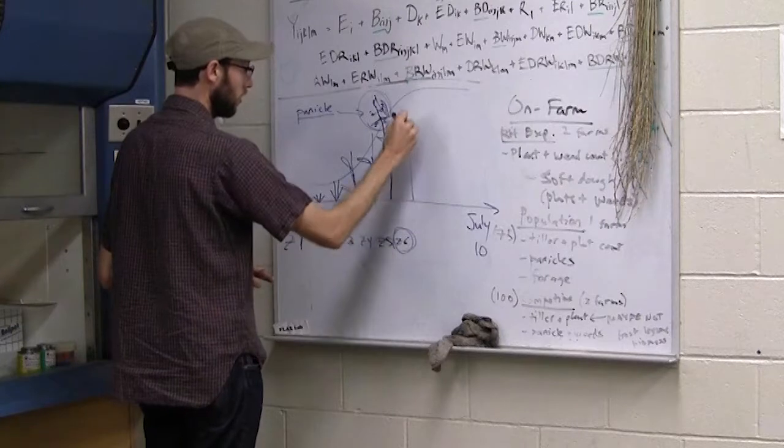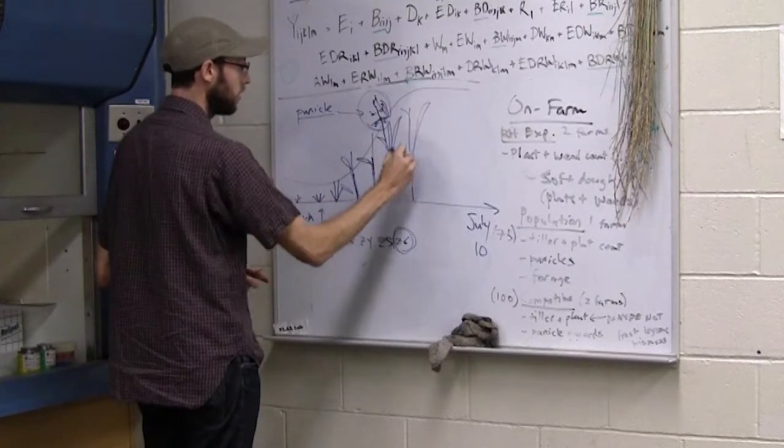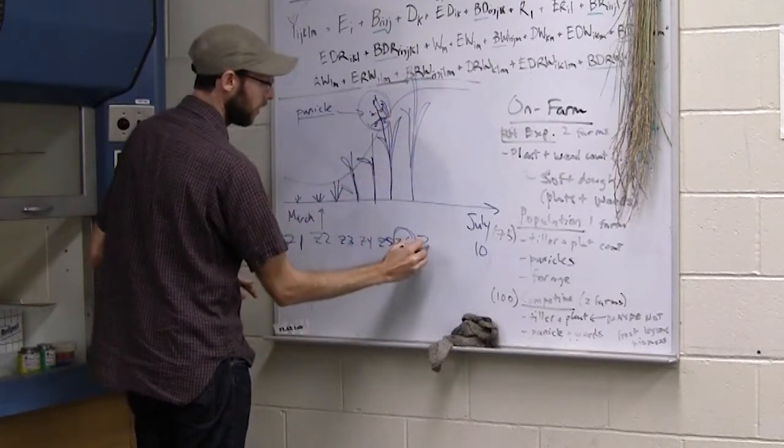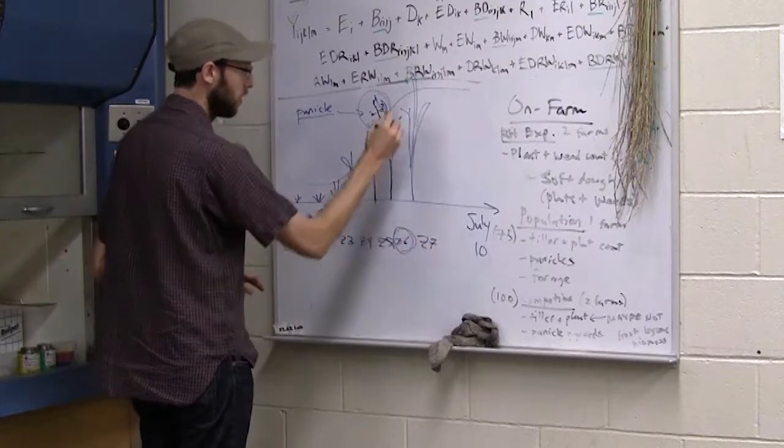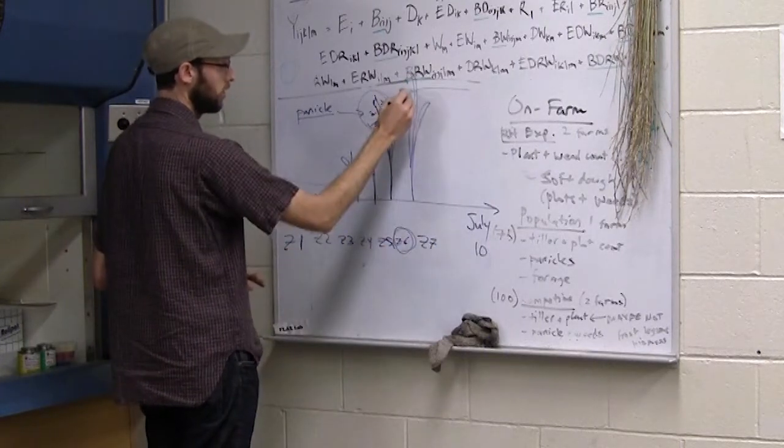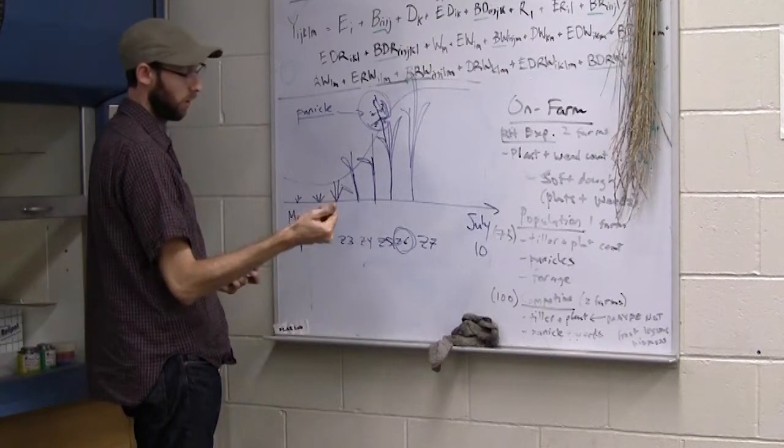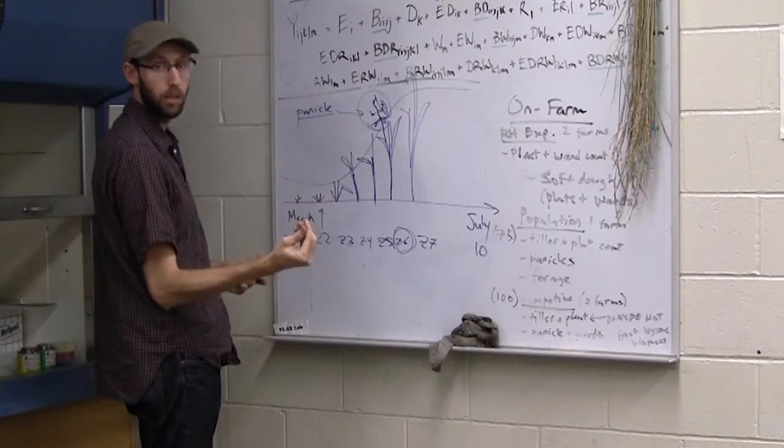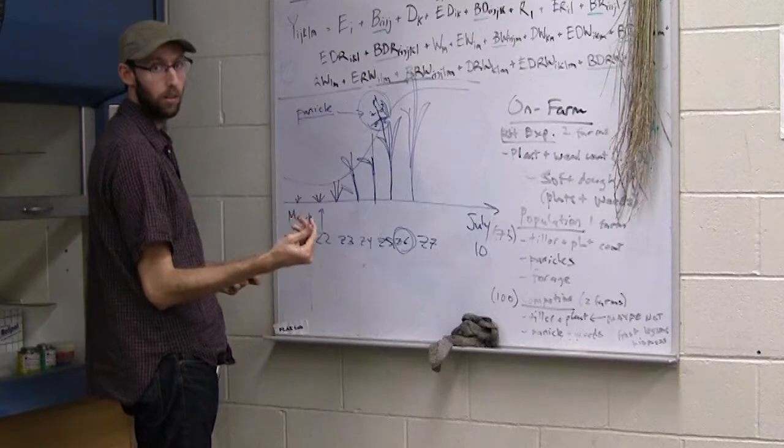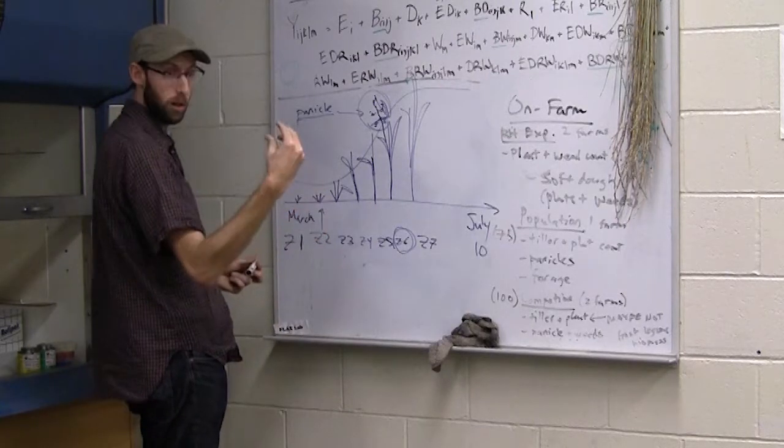If things are good, you keep going through development stages. And Z7 is known as the milk stage. So if you squeeze the kernel, you get this kind of pasty milky substance on your hands.